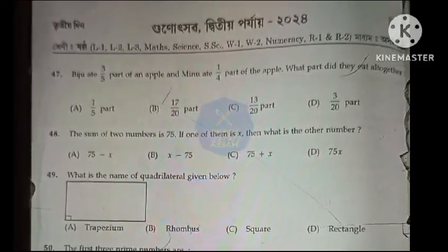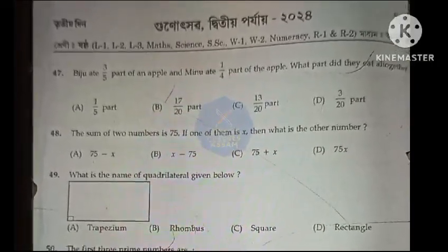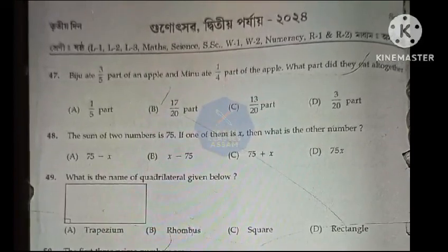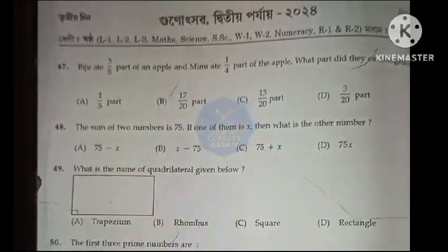The sum of two numbers is 75. If one of them is x, then what is the other number? Option A, 75 minus x.